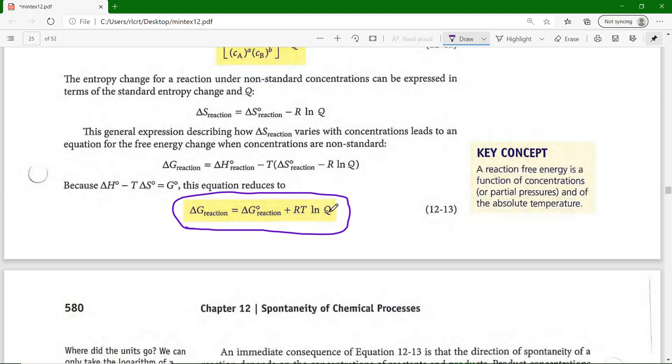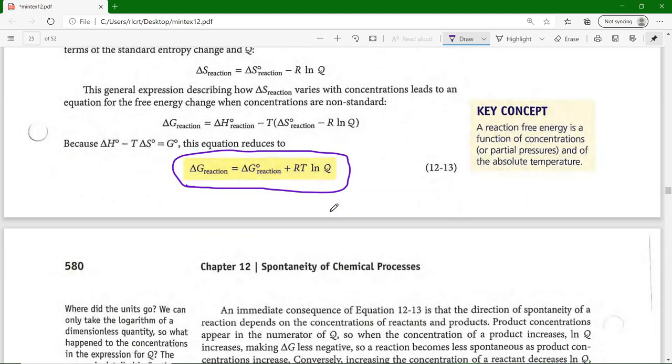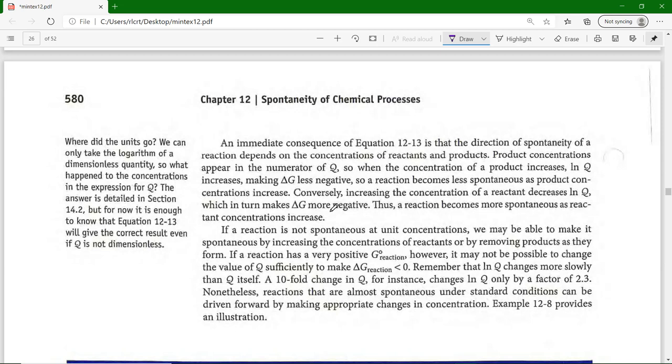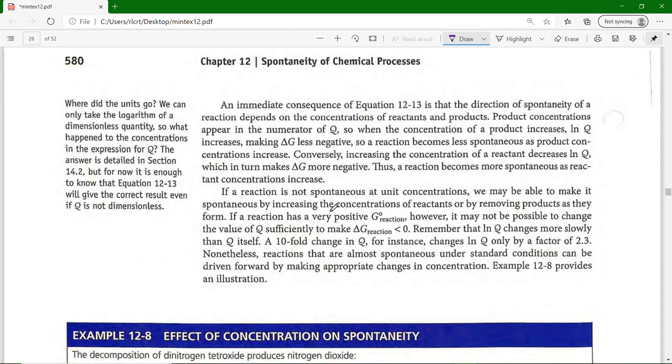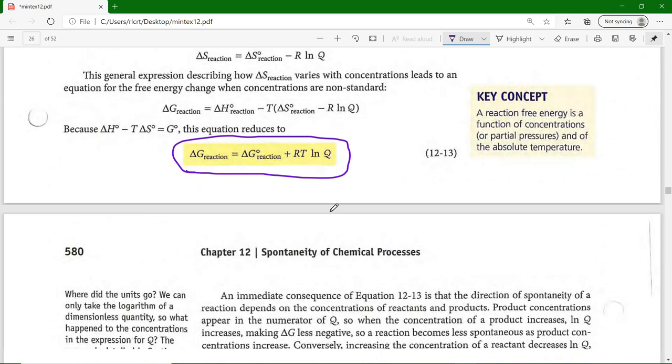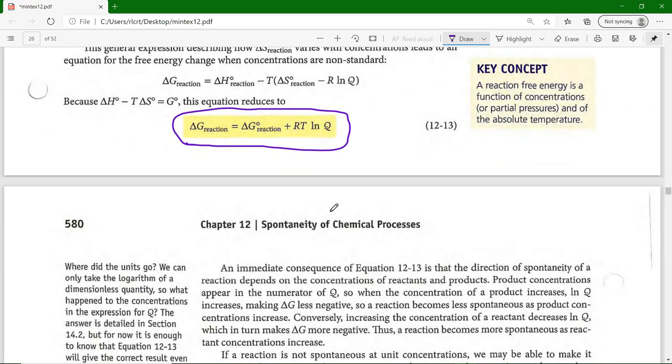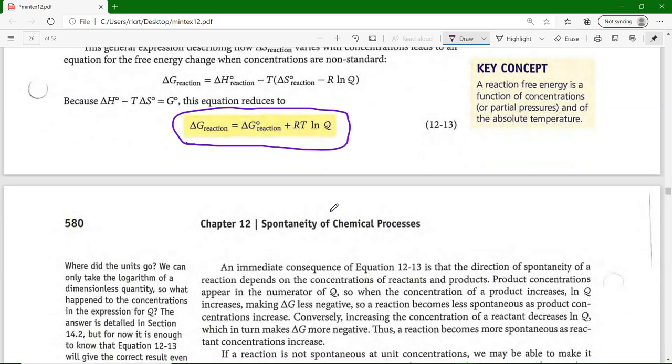Product concentrations appear in the numerator, so when we have more product, ΔG becomes less negative because it's ΔG = ΔG° + RT ln Q. Q gets bigger, and if ΔG° was negative, well it would become less negative.